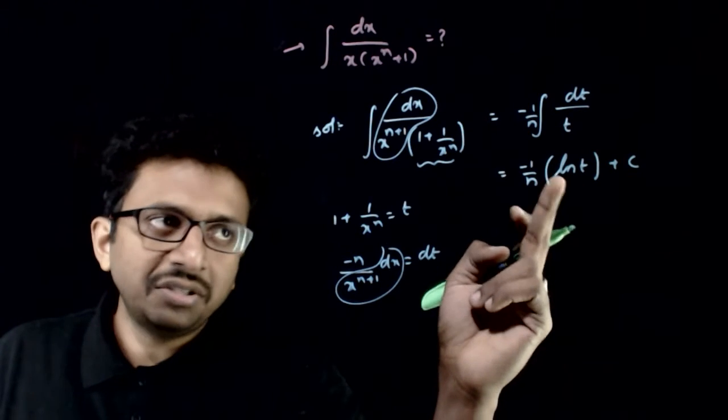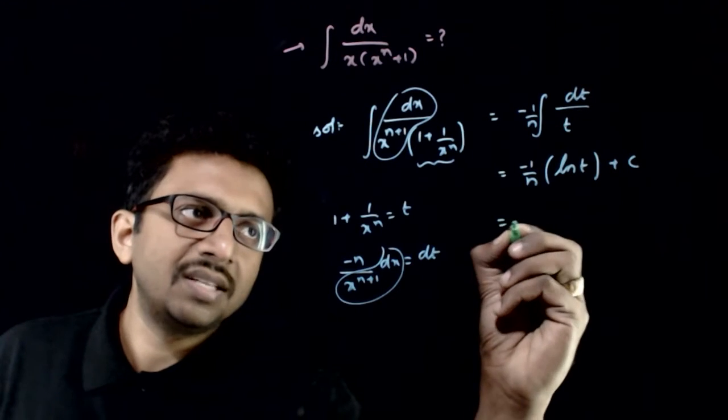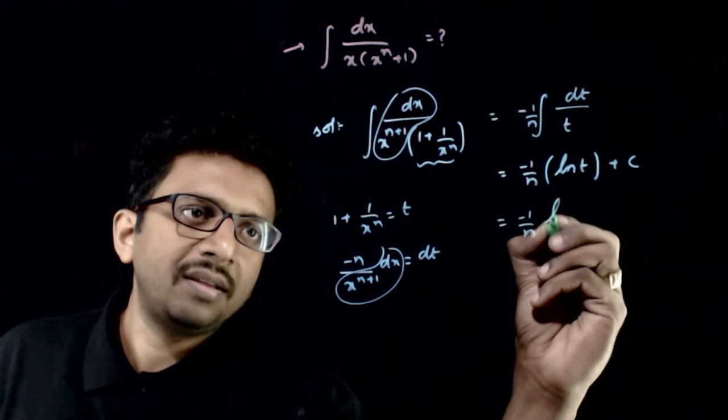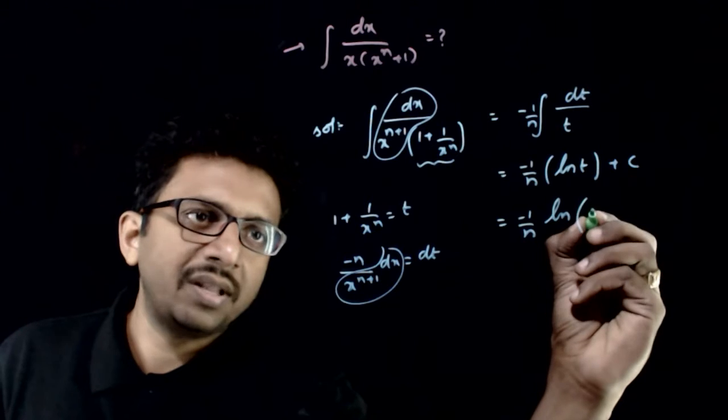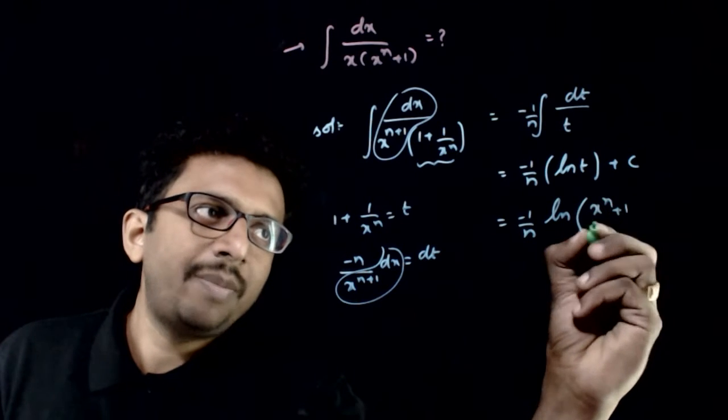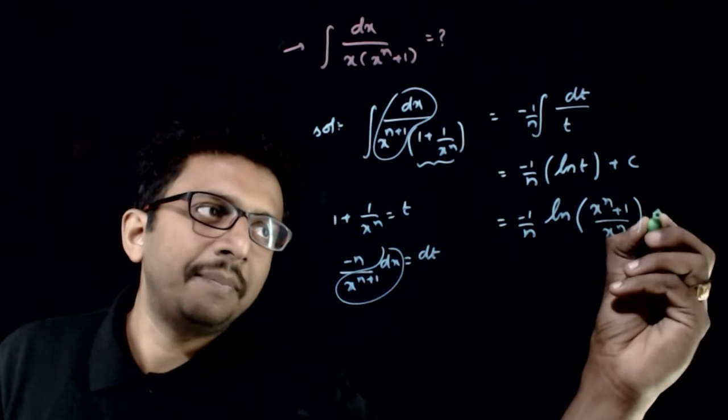Once you have the integration, you just need to substitute this. That is equal to minus 1 by n ln of t is 1 plus 1 by x power n, that is x power n plus 1 by x power n plus c.